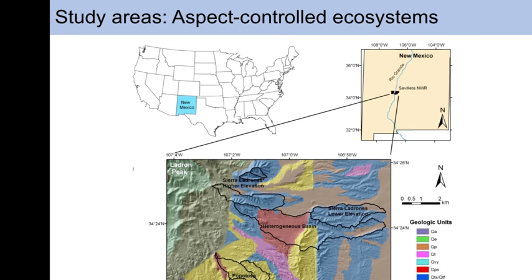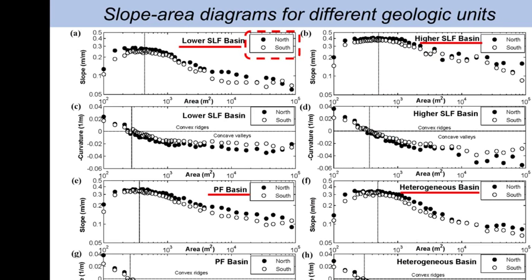In this area, vegetation differs between north-facing and south-facing as I showed earlier — they have different vegetation types. If you look at their slope-area diagrams, the question is: which is steeper — north-facing or south-facing? North-facing slopes are plotted as black dots and south-facing slopes as white dots. North-facing slopes, regardless of whether they are lower or higher Sierra Ladron — mostly homogeneous units — are always steeper than south-facing slopes. This phenomenon can be observed not only in uniform lithology but also in heterogeneous lithology.